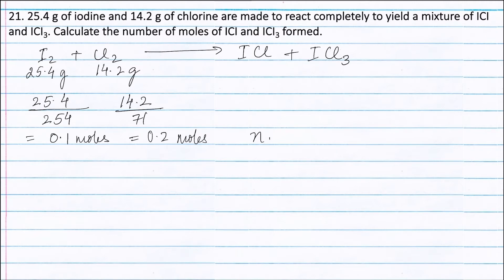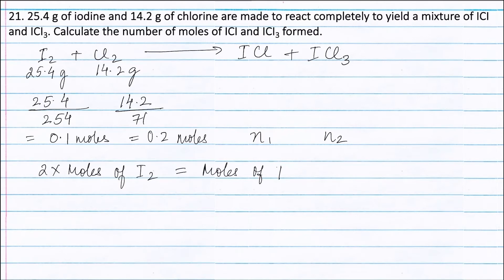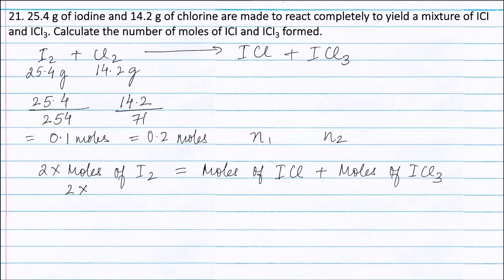Let the moles of ICl be N1 and moles of ICl3 be N2. Applying the principle of atom conservation on iodine atoms: 1 mole of ICl contains 1 mole of iodine atoms, 1 mole of ICl3 contains 1 mole of iodine atoms, and 1 mole of I2 contains 2 moles of iodine atoms. So: 2 × 0.1 = N1 + N2, giving 0.2 = N1 + N2.